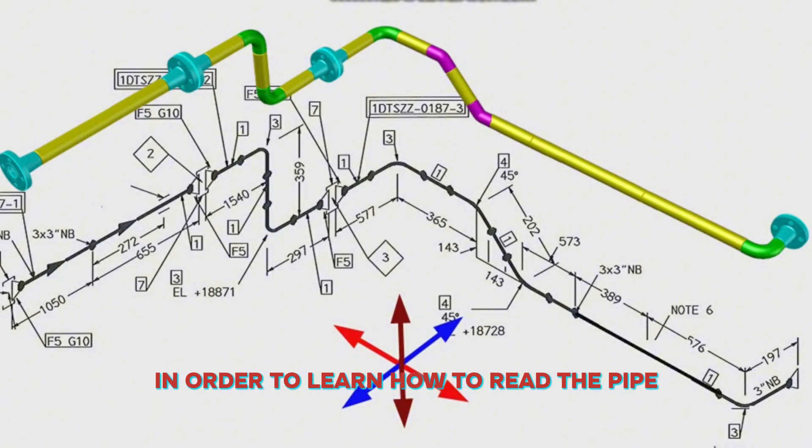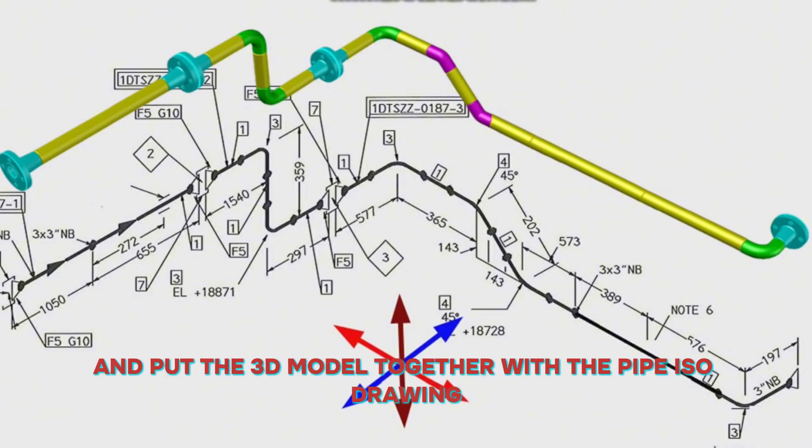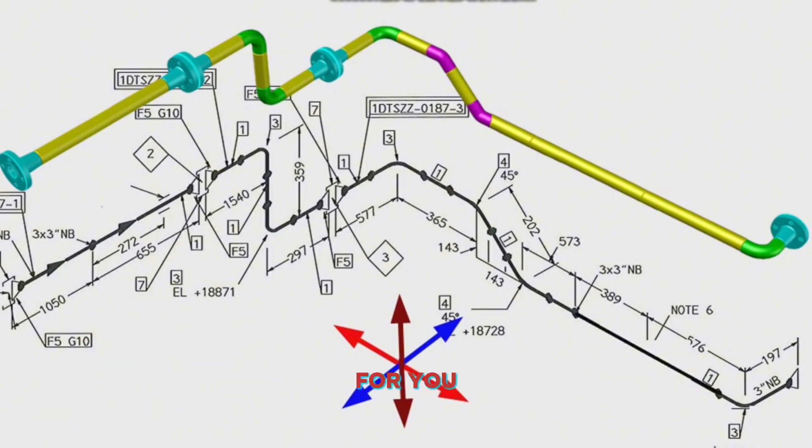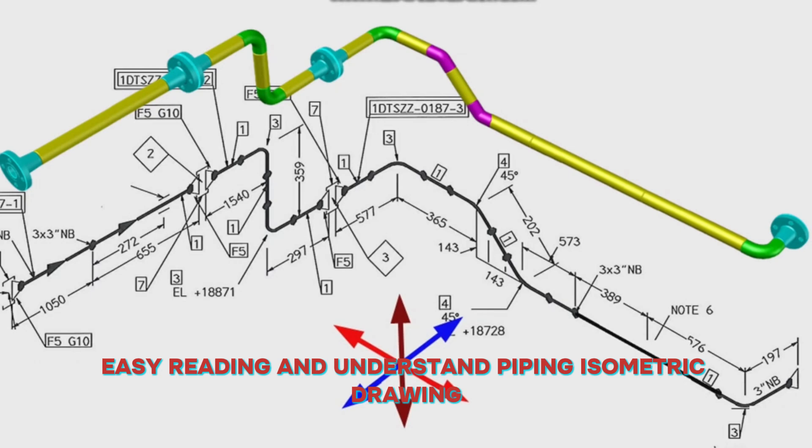In order to learn how to read the pipe isometric drawing correctly according to the instructions, we must first learn what this scheme shown in the pipe drawings is and its function. We also prepared a 3D model of this pipeline and put the 3D model together with the pipe ISO drawing for easy reading and understanding of piping isometric drawings.